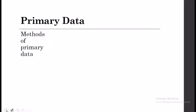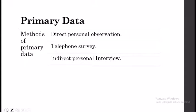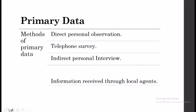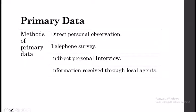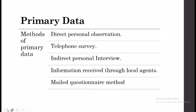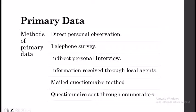There are several methods to collect primary data. The first method is direct personal observation. Others include telephonic surveys, indirect personal interviews, sending questionnaires, information received through local agents, mailing questionnaires directly, and sending questionnaires through trained enumerators. All these methods have their advantages and limitations, which will be provided in a detailed PDF.